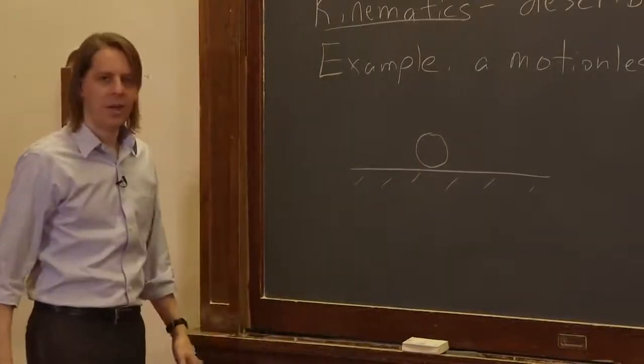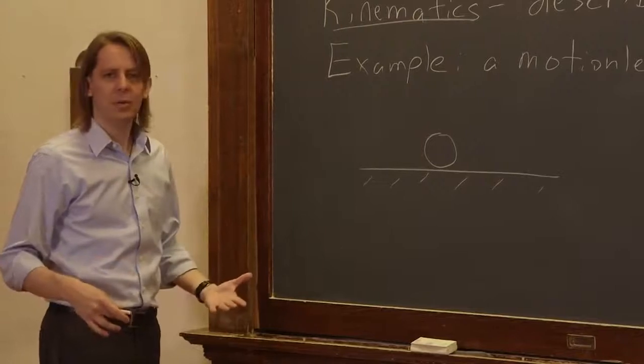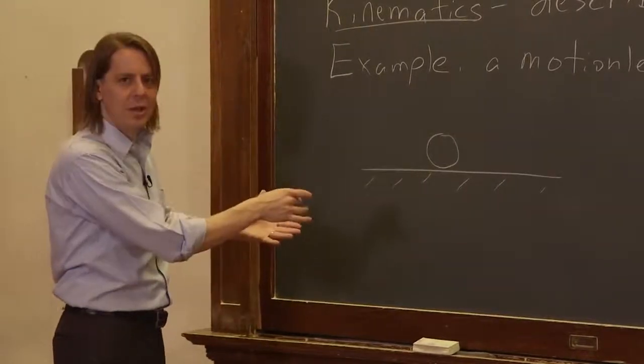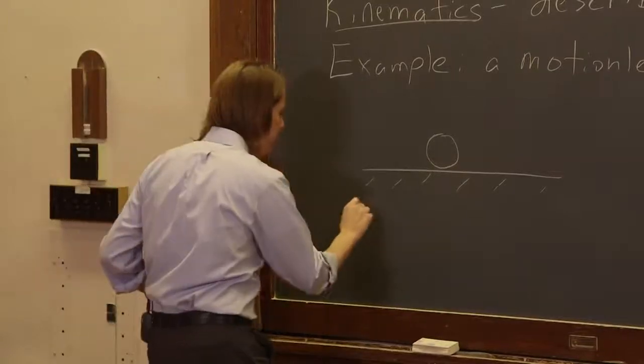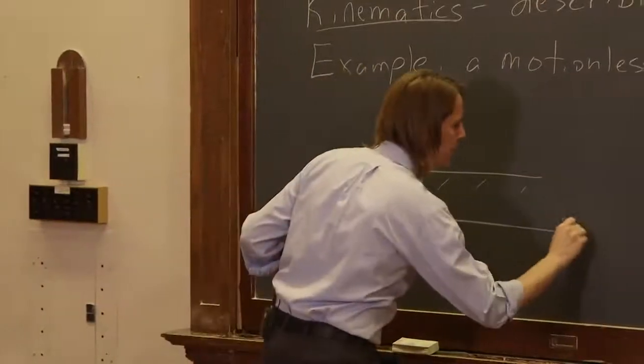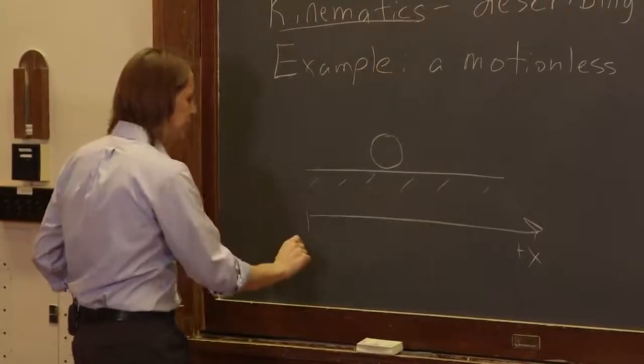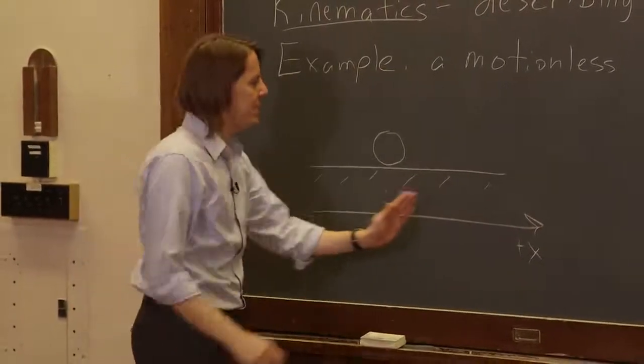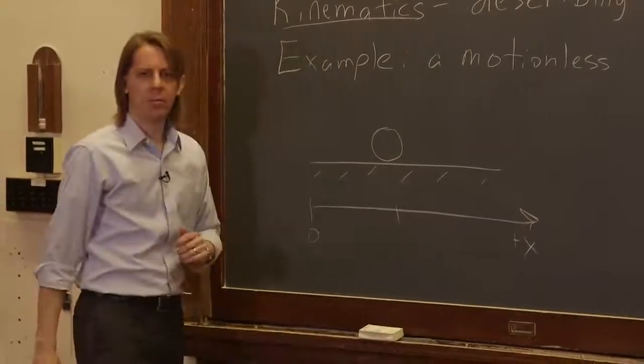Now if we're going to describe this mathematically, we need to give it an axis. It needs to be described its position on an axis. So here I'll draw an axis in my drawing like this. This is the plus X direction on this one dimensional axis. And this is zero.